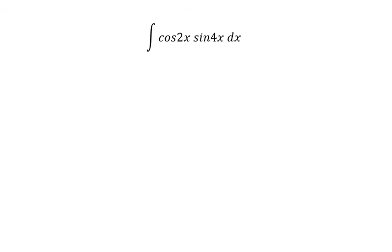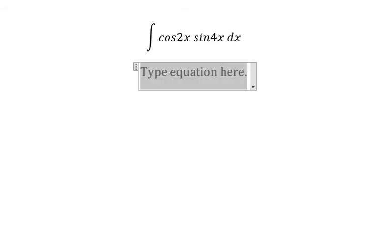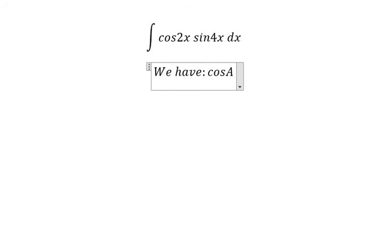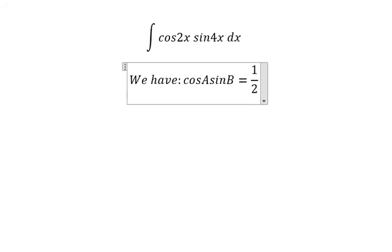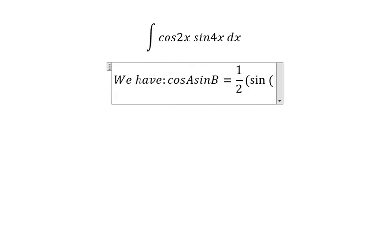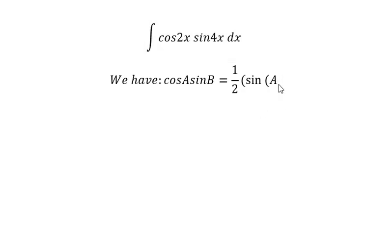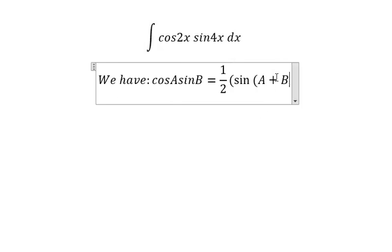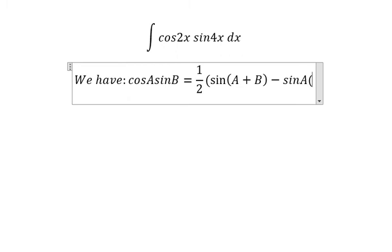Hello everybody. Today I will talk about calculus — the topic is about integration. I will show you the answer. We have cos(A)sin(B) equals 1 over 2, sin(A plus B) minus sin(A minus B).